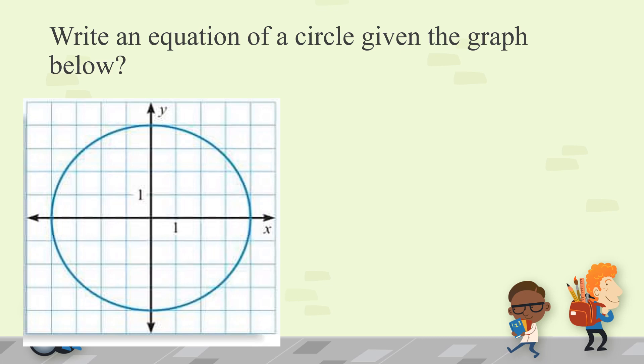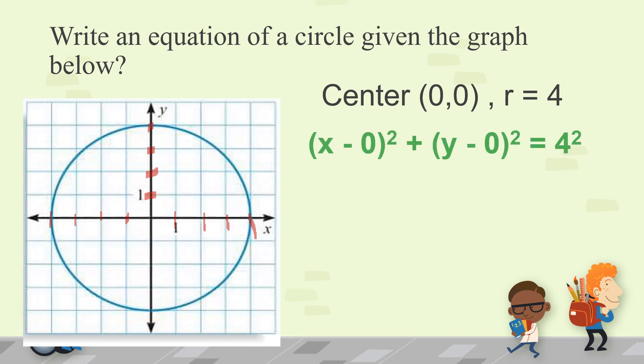Example number 1: Write an equation of a circle given the graph. Looking at the graph, the center is at (0, 0) and the radius is 4 — counting from the center: 1, 2, 3, 4. Using the formula: x minus 0 squared plus y minus 0 squared is equal to 4 squared. Simplifying gives x squared plus y squared is equal to 16.